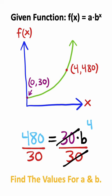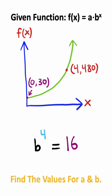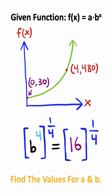I can divide 30 on both sides to get b to the 4th by itself, and 480 divided by 30 is 16. I can take both sides of the equation and raise it to the 1/4th power, and 16 to the 1/4th power is 2.